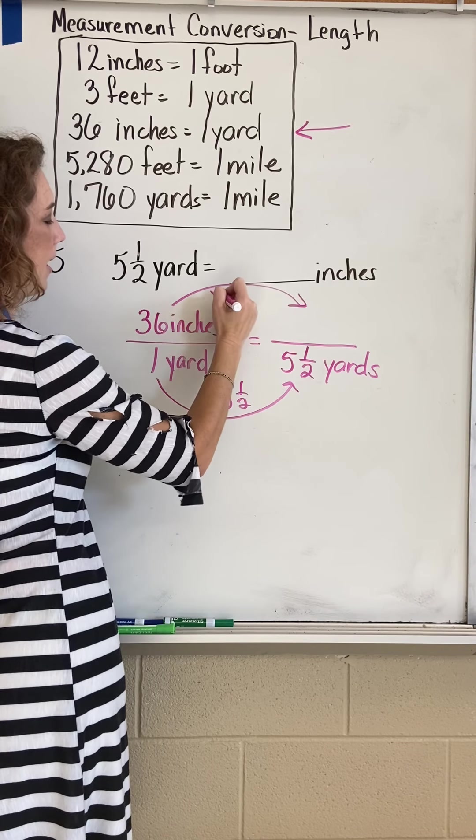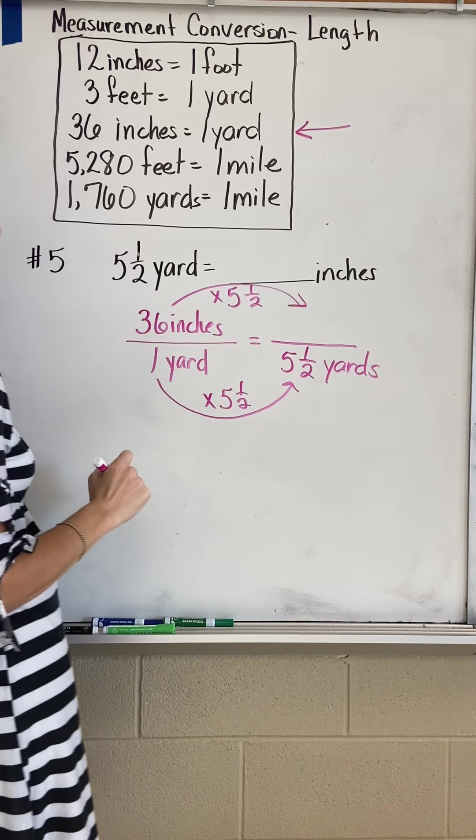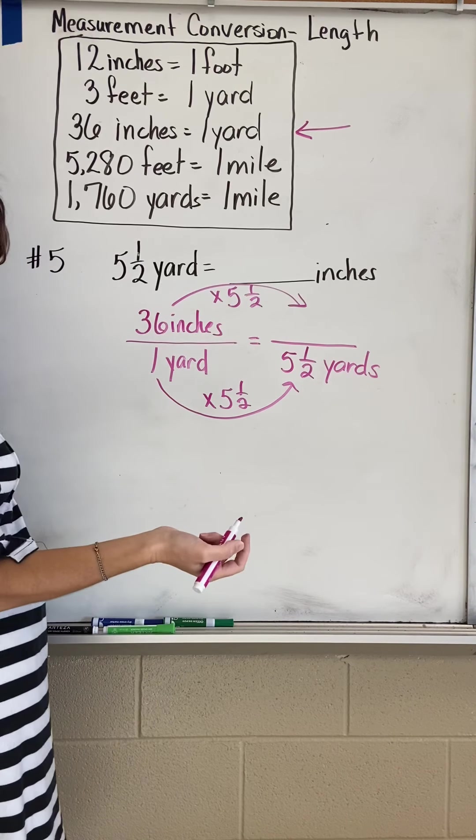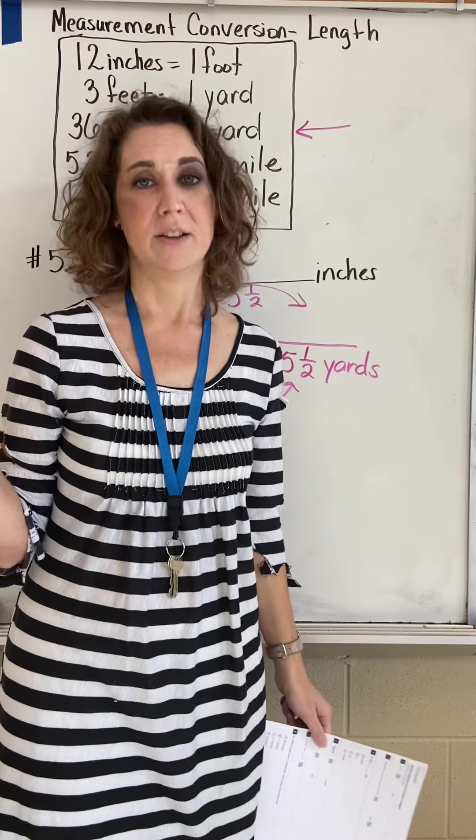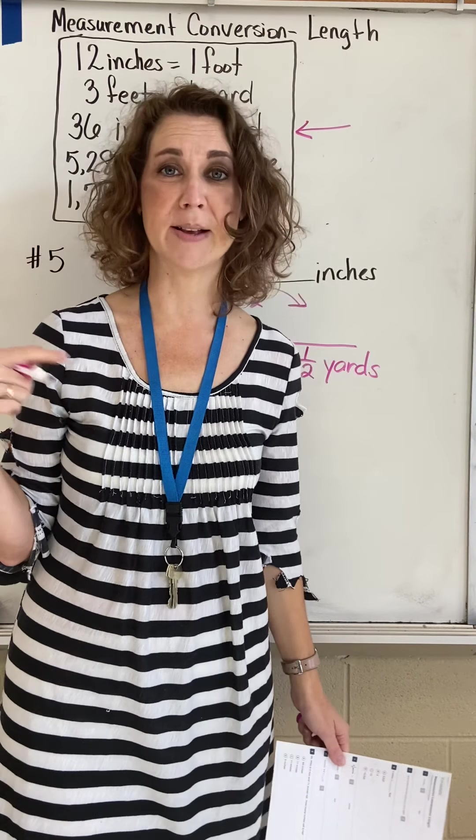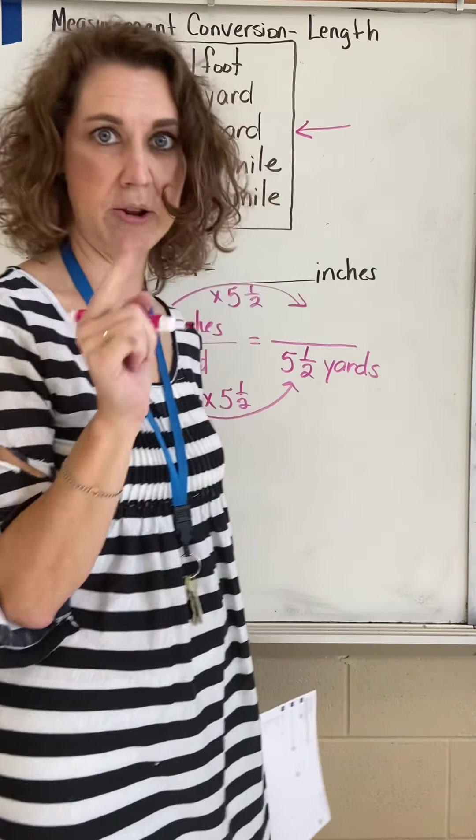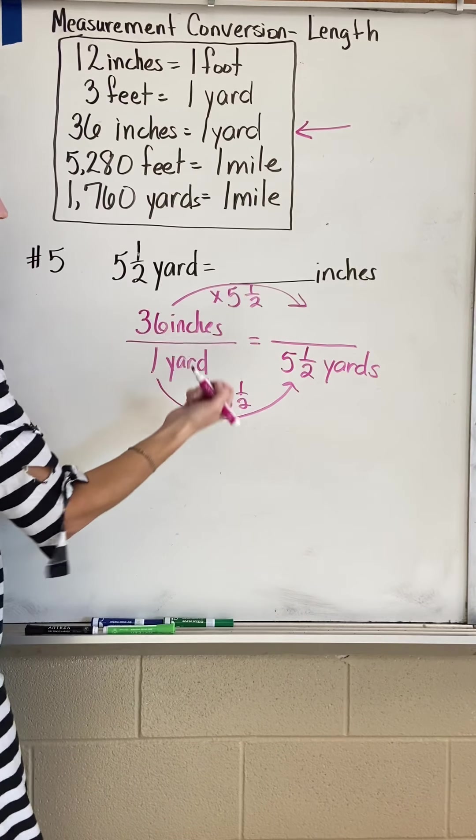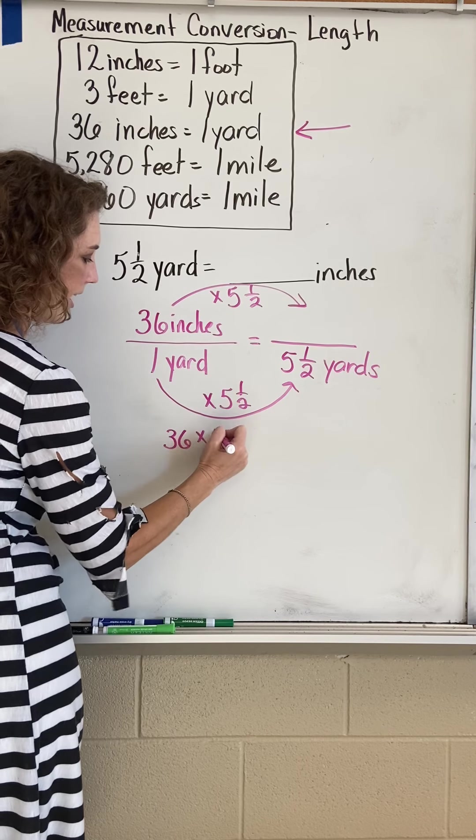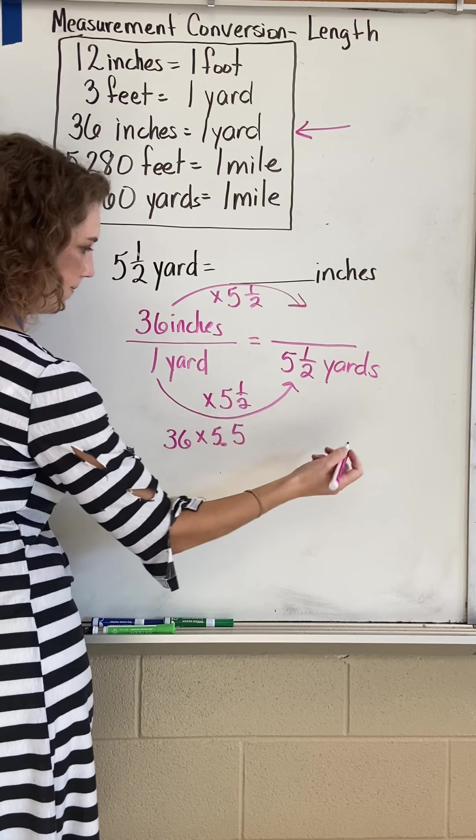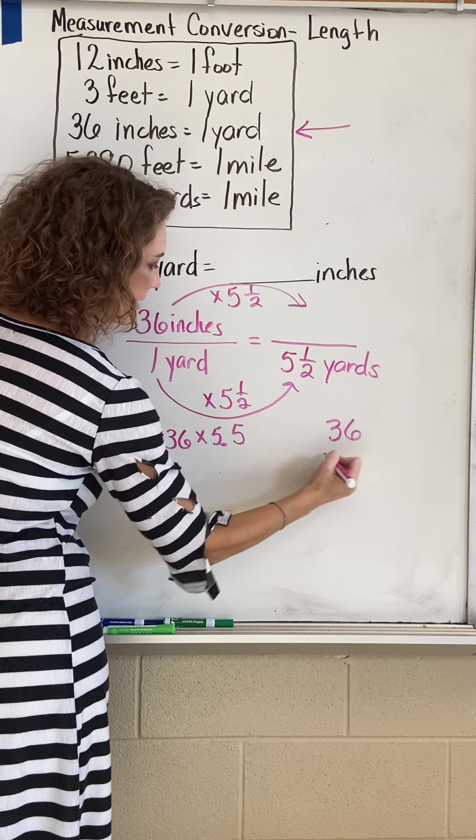We're going to do the same thing to the top, times five and one half. So we're going to do 36 times five and a half. You might be like, wait a minute, how are we going to do that? Well, we're going to change it to a decimal. Five and a half is the same as 5.5, so let's do 36 times 5.5. I'm going to stack mine.